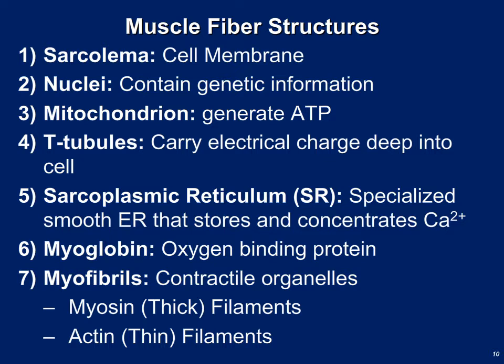Myoglobin is the reason red meat is red — it's red because of the myoglobin pigment. Some muscles use a lot of oxygen during aerobic exercise, so they have a lot of myoglobin. Myofibrils are the contractile organelles within an individual muscle cell, divided into sarcomeres, which are the smallest contractile unit of a muscle cell — an important term that may show up on an exam. Sarcomeres are composed of the contractile proteins myosin and actin.